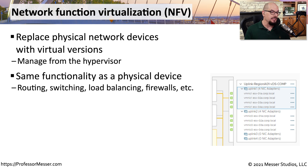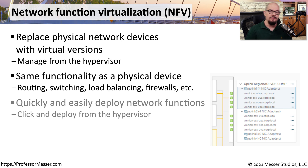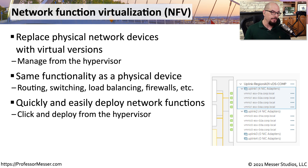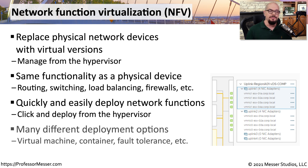This not only provides us with the same functionality we had when we had physical switches and physical routers, but in many cases provides us with additional capabilities. For example, when you need a new switch or a new router, you don't have to go out, purchase a new router, put it into a rack, power it up, and then physically connect those devices. Instead, you simply click a few buttons inside of the hypervisor, and you can drag and drop a brand new router or switch into your network infrastructure. This means you could have many different kinds of deployment options for your virtual machines, your containers, and you can add fault tolerance and different monitoring services, all from this network function virtualization.